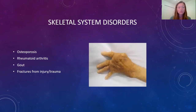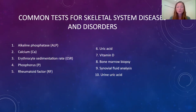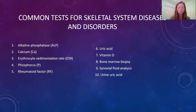Some common disorders of the skeletal system include osteoporosis, osteoarthritis, rheumatoid arthritis, gout, osteocarcinomas — which are cancers of the bone — and other diseases related to nutritional deficiencies. Some common blood and other tests related to the skeletal system are on table 5-2, page 92. These tests are done to diagnose such things as arthritis, gout, or multiple myeloma, which is a cancer that starts in the bone marrow.